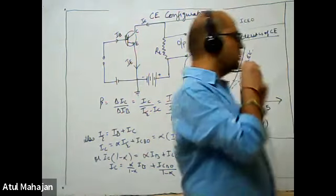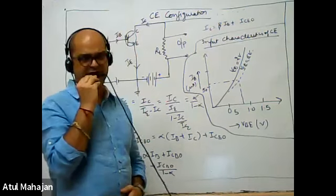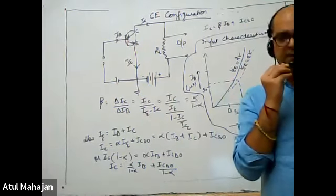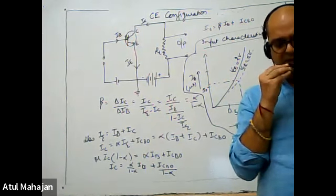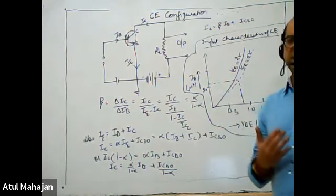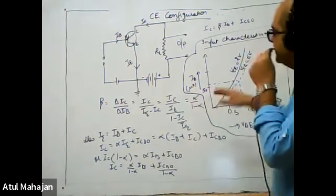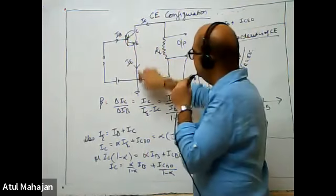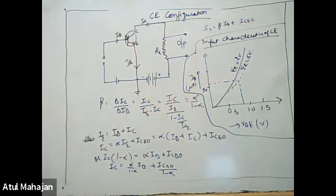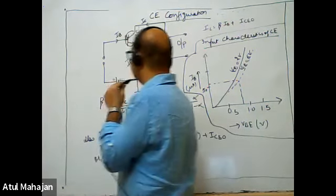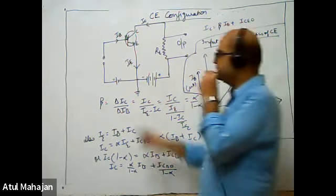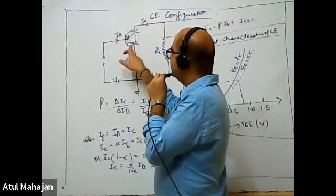Next is the common emitter configuration. In case of common emitter configuration, as the name suggests, the emitter is the common terminal. The emitter terminal is made common with the input and output. This is the basic circuitry: the emitter terminal is common with both the input and output sections. The emitter-base junction is forward biased and the collector-base junction is reverse biased.